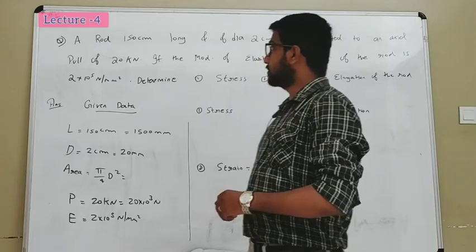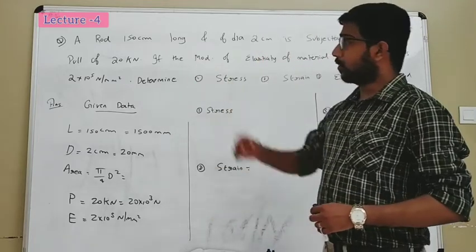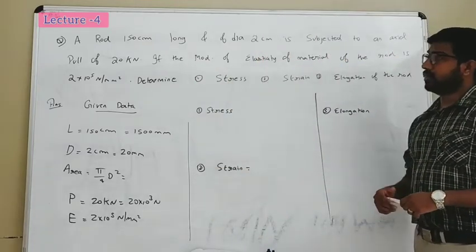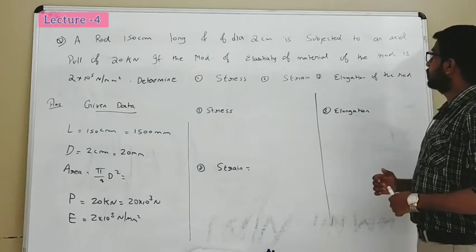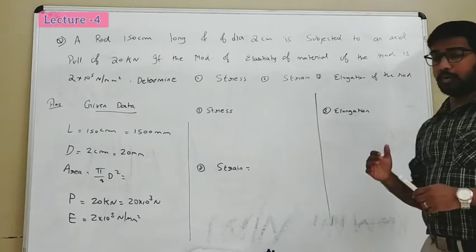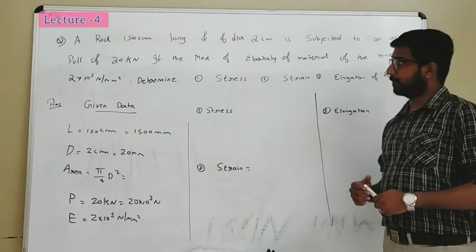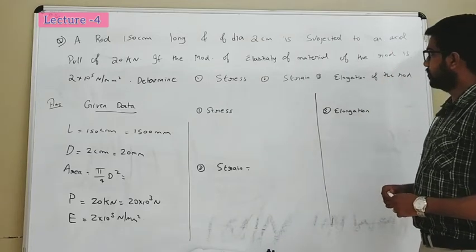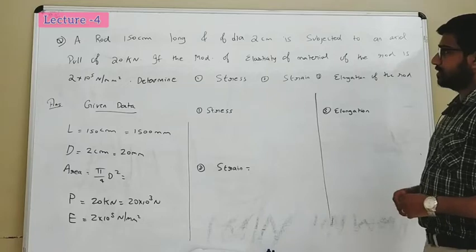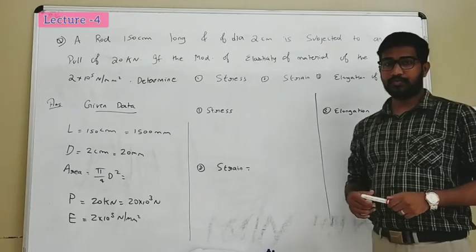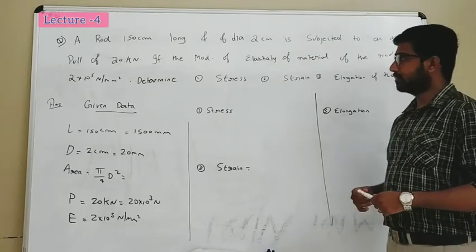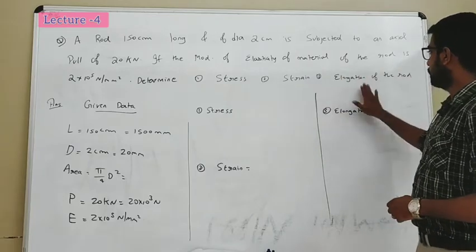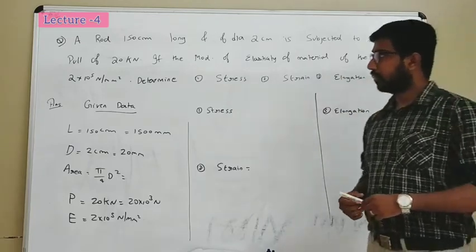The first question is: a rod 150 cm long and of 2 cm diameter is subjected to an axial pull of 20 kilo Newton. If the modulus of elasticity of the material of the rod is 2 into 10 raised to 5 Newton per mm², determine stress, strain, and elongation of the rod.